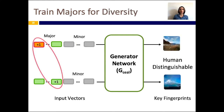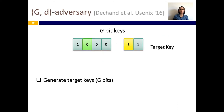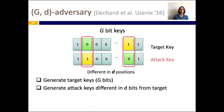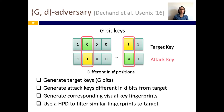In our paper, which I encourage you to read, we also train major components to have effects on different visual aspects of generated images. We evaluated the resilience of the SEAL model to powerful adversaries. Specifically, we assume the adversary targets a specific key, then generates multiple attack keys that are different in only D bits from the target key. The adversary then feeds these keys to SEAL and generates corresponding visual key fingerprints, then uses the HPD classifier to automatically identify attack keys whose fingerprints are perceived to be similar to those of the target key, and uses these keys to launch the final man-in-the-middle attack.